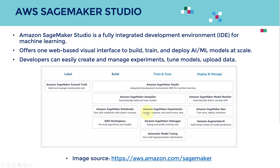You can also leverage Amazon SageMaker Experiments to capture and organize all your experiments in one place. You can also use SageMaker Debugger to debug the model as it's being trained. And you can perform automatic model tuning — one click to perform a hyperparameter tuning job, tune your model's hyperparameters, and improve model performance and robustness.